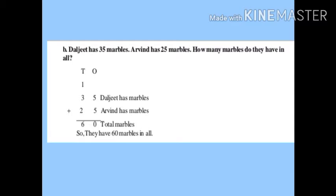35 represents 'Daljit has marbles,' 25 represents 'Arvind has 25 marbles.' Add them: 5 plus 5 is 10, write 0 carry 1; 3 plus 1 is 4, plus 2 is 6. Total is 60. Final statement: 'They have 60 marbles in all.'